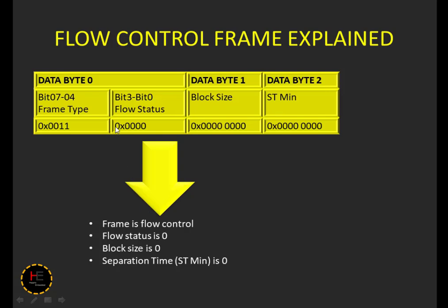Here the flow status, block size, and separation time minimum are all zero, and the frame type is three, which means it represents the flow control frame type.